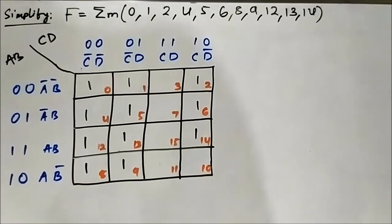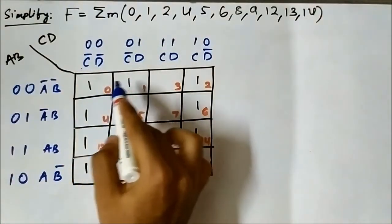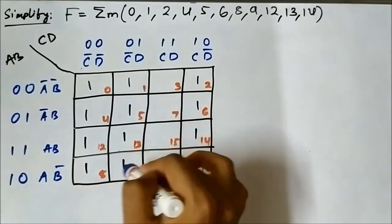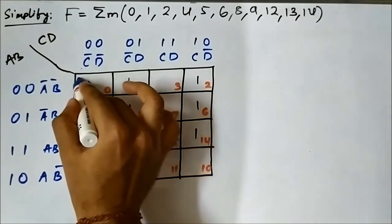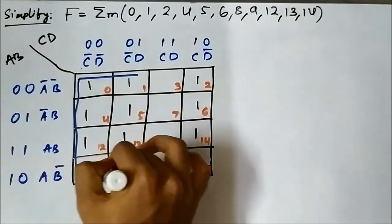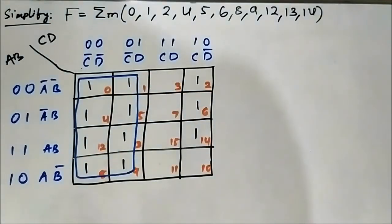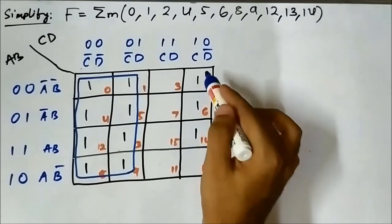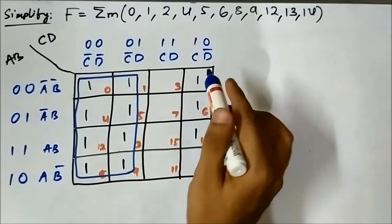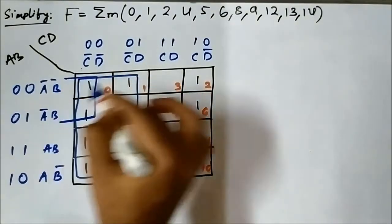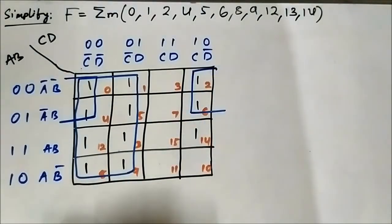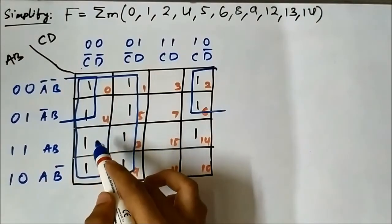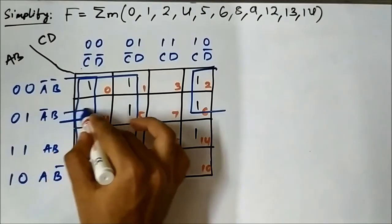Now we have to form the groups. If you pay attention to cells 0, 1, 4, 5, 12, 13, 8, and 9 — these 8 cells are adjacent, so we can group all of these to form an octate. Also pay attention to cells 0, 2, 4, and 6 — we can group these four to form a quad. Again, pay attention to cells 4, 12, 6, and 14 — to form another quad.